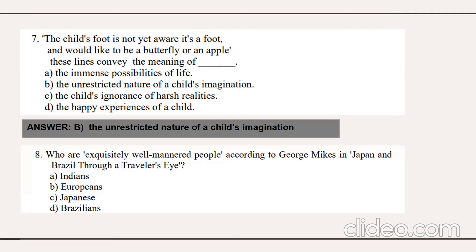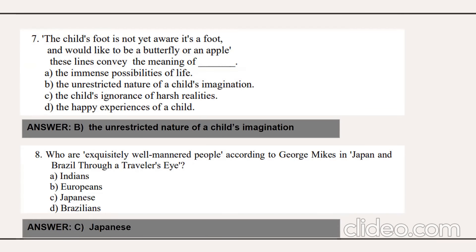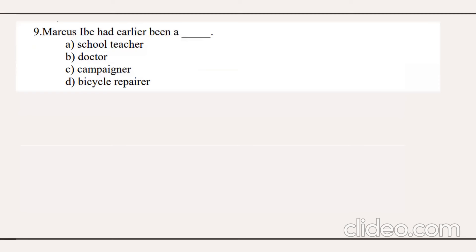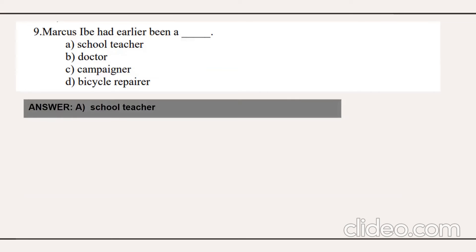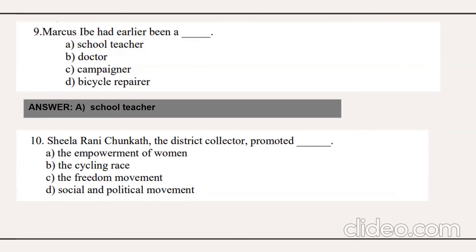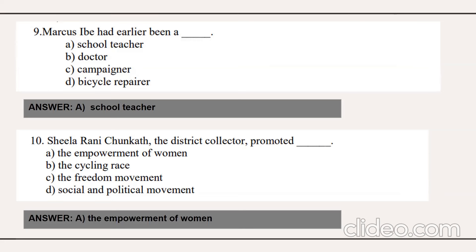Question number eight: who are exquisitely well-mannered people according to George Mikes in the article 'Japan and Brazil Through a Traveler's Eye'? Option C — the Japanese. Question nine: Marcus had earlier been a school teacher before he became a campaigner. Option A. Question ten: Shilarani Chunkart, the district collector, promoted the empowerment of women — option A.